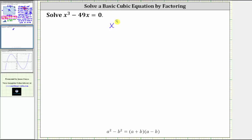We are asked to solve the equation x cubed minus 49x equals zero. We will solve this equation by factoring.